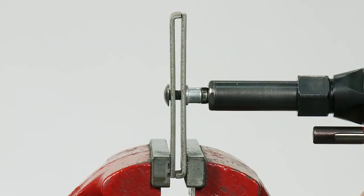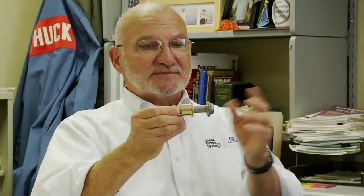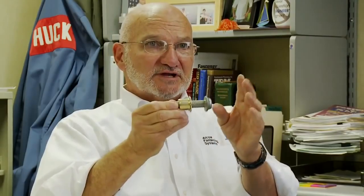We swage the collar in, so we have a very shallow groove, big root radius in there, and that gives us high fatigue strength. We're looking at five times the fatigue strength of a conventional thread.